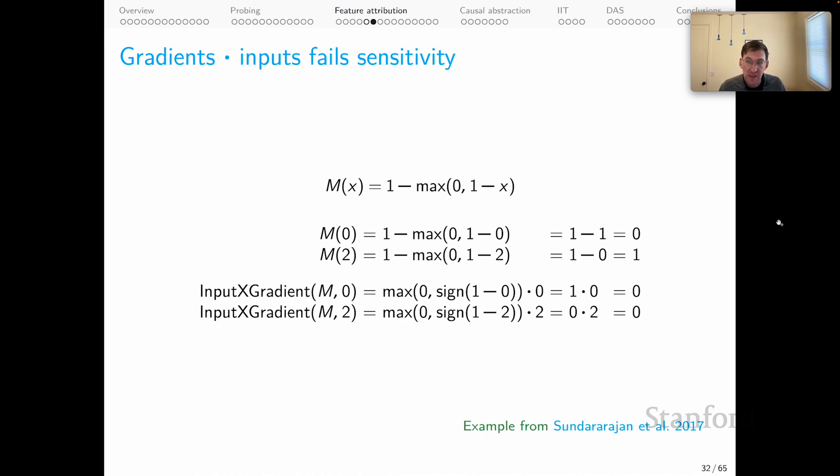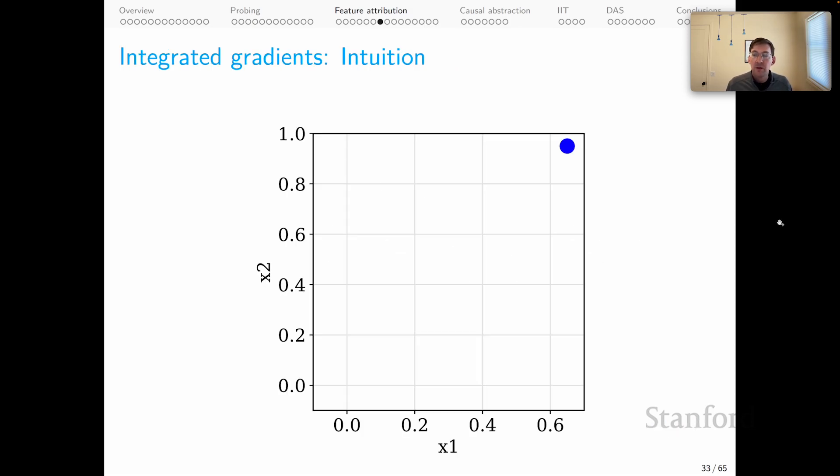The intuition behind integrated gradients is that we are going to explore counterfactual versions of our input. And I think that is an important insight. As we try to get causal insights into model behavior, it becomes ever more essential to think about counterfactuals. Here's the way IG does this. We have two features in our space, x1 and x2, and this blue dot represents the example that we would like to do attributions for. With integrated gradients, the first thing we do is set up a baseline. And a standard baseline for this would be the zero vector. And then we are going to create synthetic examples interpolated between the baseline and our actual example. And we are going to study the gradients with respect to every single one of these interpolated examples, aggregate them together, and use all of that information to do our attributions.